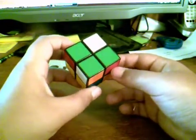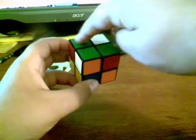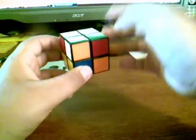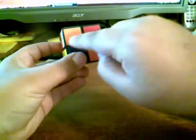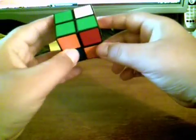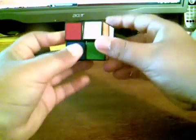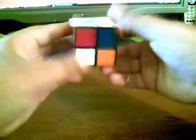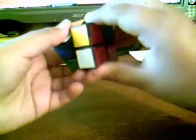Alright, so to get the first layer, you have to find each of the corners of any color that you want, but also make sure that these sides are all permuted correctly. So first, let me just scramble this up some.